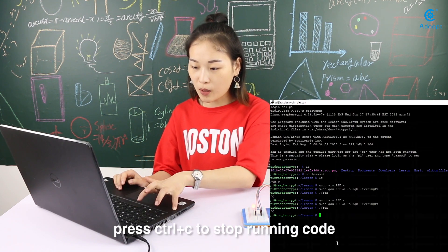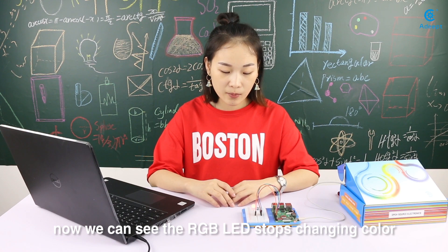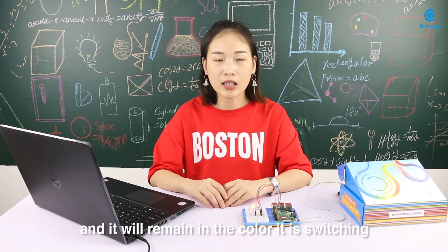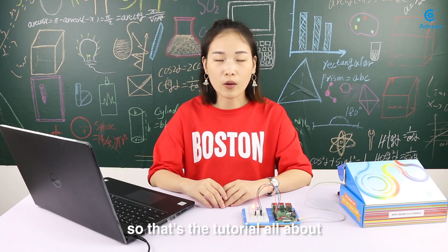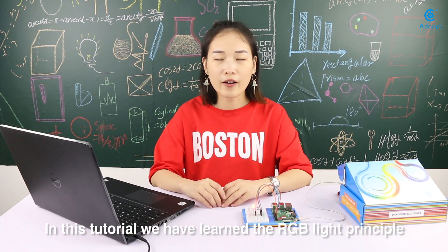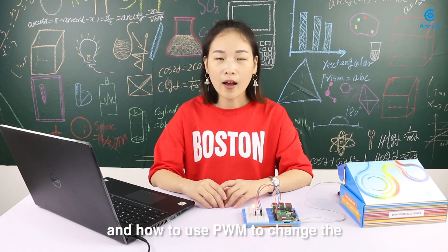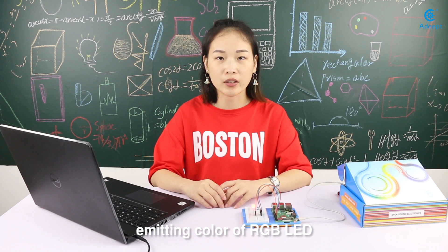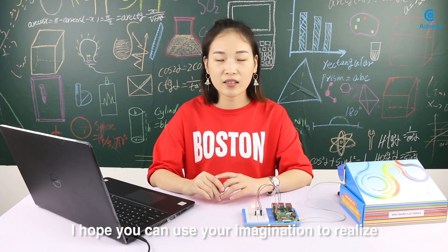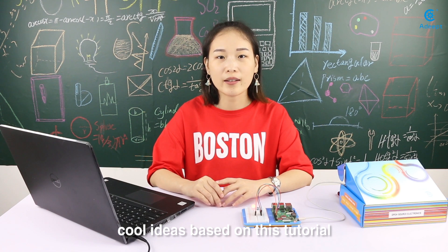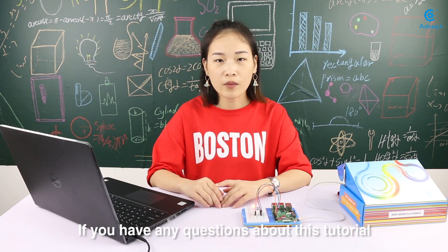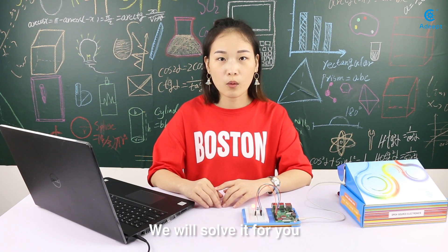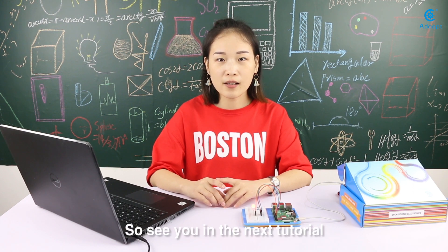After this experiment, press CTRL and C to stop running code. Now we can see the RGB LED stops changing color and it will remain in the color it was switching. So that's the tutorial all about. In this tutorial we have learned RGB LED principle and how to use PWM to change the emitting color of RGB LED. I hope you can use your imagination to realize cool ideas based on this tutorial. If you have any questions about this tutorial, you can leave a message on our website. We will solve it for you. So see you in the next tutorial.